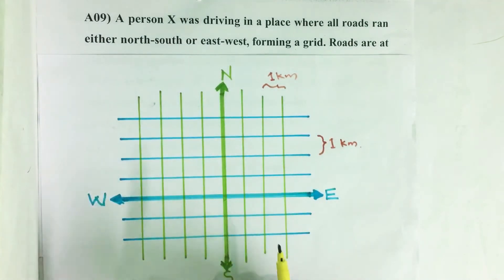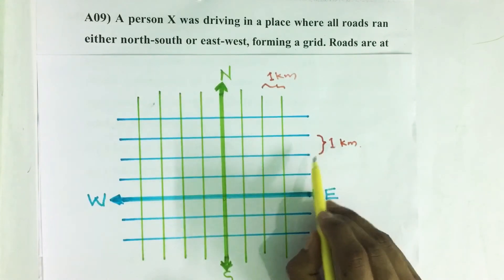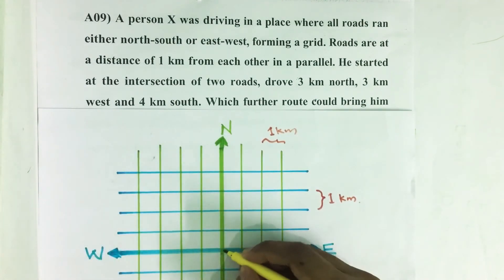The east-west roads are also parallel to each other and 1 kilometer apart. A person who is driving from the intersection of two roads is moving...